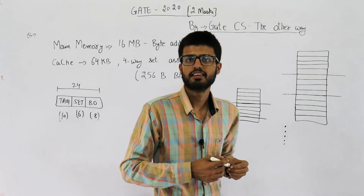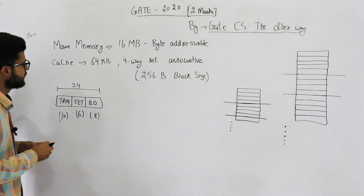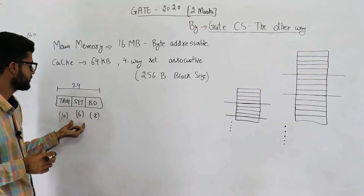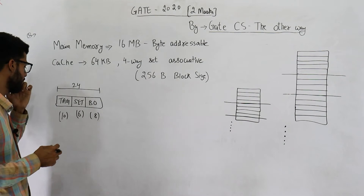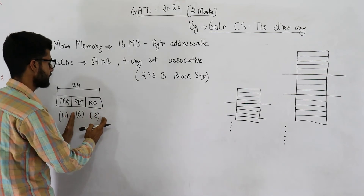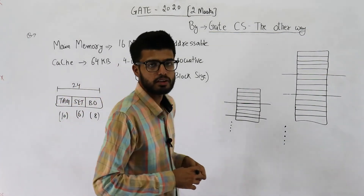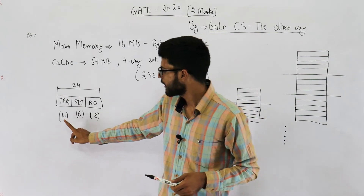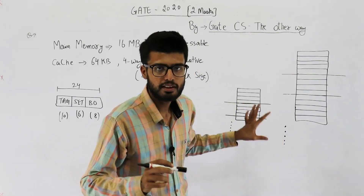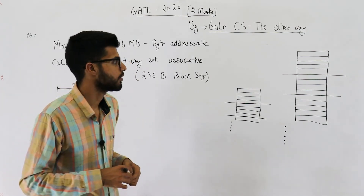As promised earlier, I am going to solve this question the other way. Earlier, we found block offset first, then set field bits, then tag bits by subtracting from 24. Now instead, we will find the number of bits in the tag field first. I want you to really understand this method because it gives a very good understanding of cache mapping. If you haven't watched my theory lecture on this topic, it's available free on YouTube — please watch it first.